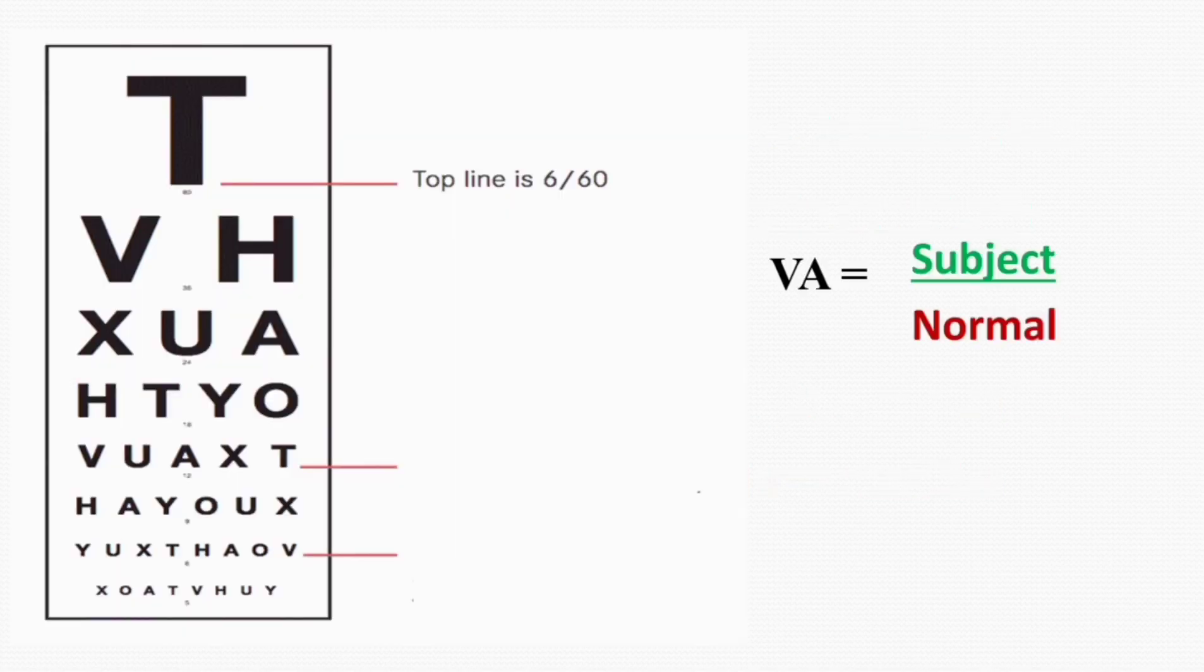Now this is a typical Snellen chart. If a subject reads only this letter T and cannot read the rest of the chart, then the visual acuity of the subject according to this formula is 6 by 60, because this line corresponds to 60. Similarly, if another person can read the letters V and H, then his visual acuity will be 6 by 36, meaning the subject is reading this line at 6 meters while a normal person can read the same line at 36 meters.